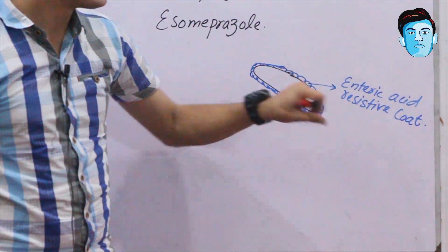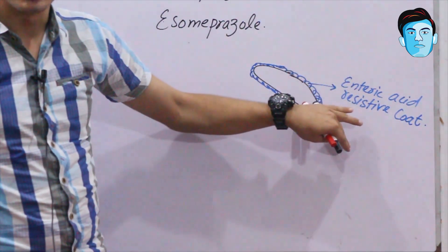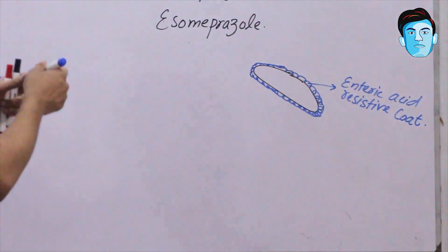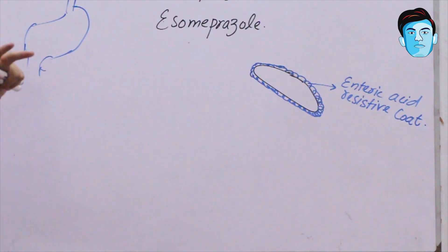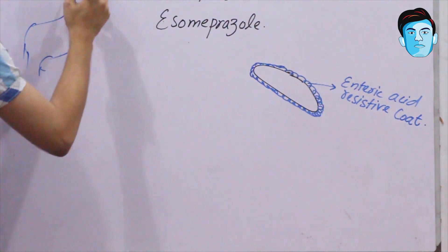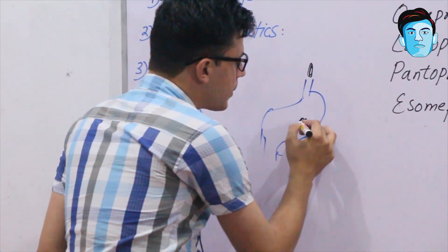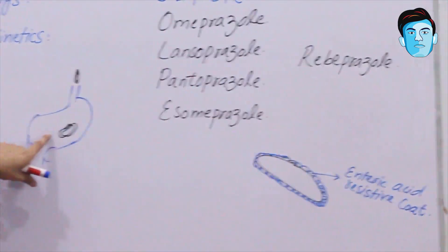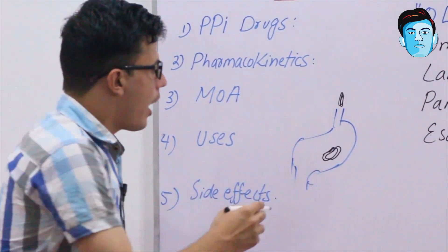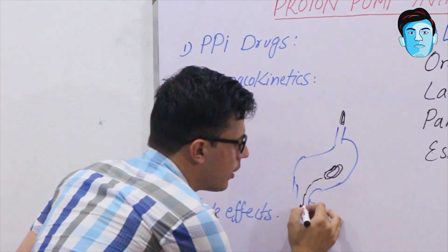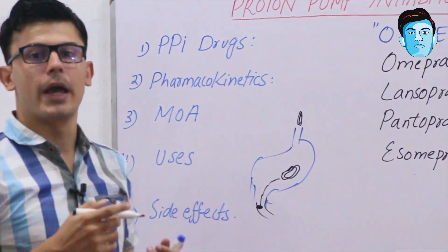Due to this specialized enteric acid-resistant coating, the PPI escapes from the gastric acid content of the stomach. When a person takes PPI orally, it goes through the esophagus into the stomach, where the enteric acid-resistant coat protects it from the gastric acid. It then passes from the stomach into the duodenum, where it gets absorbed.